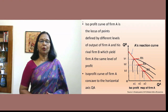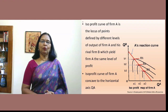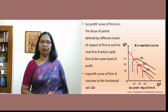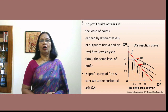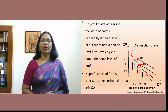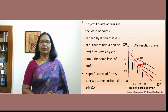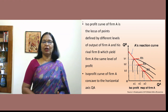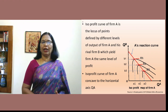The isoprofit curve is drawn with QB (firm B's output) on the vertical axis and firm A's output on the horizontal axis. Isoprofit curves 1, 2, and 3 show different levels of profit based on different combinations of output levels of firm A and firm B. These curves are drawn for firm A.